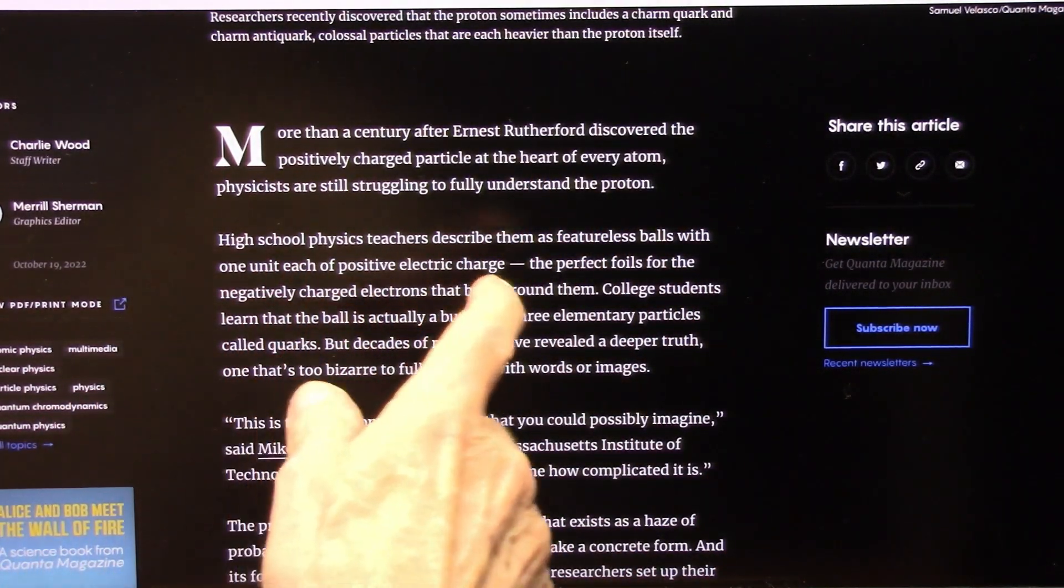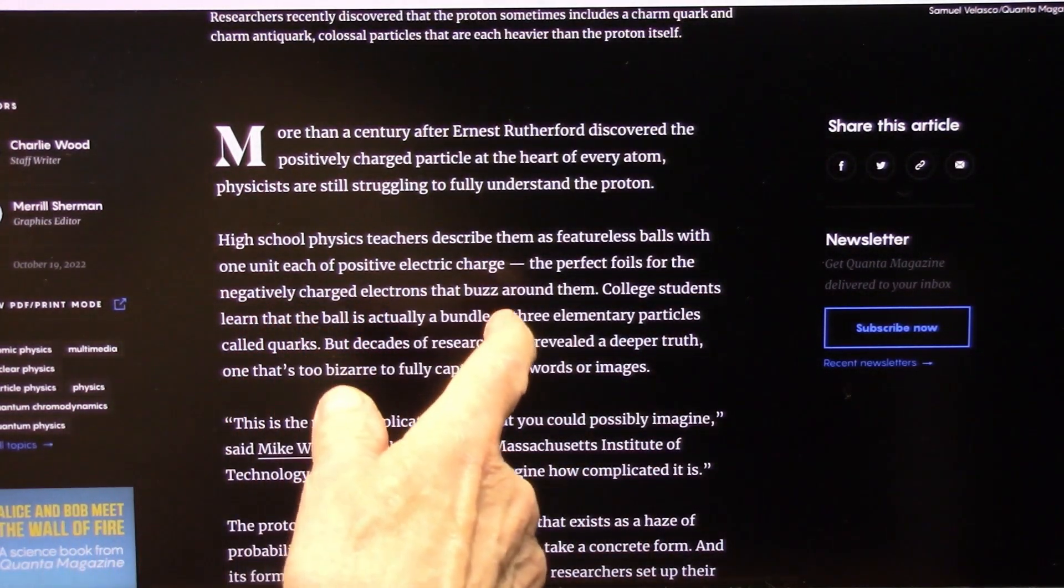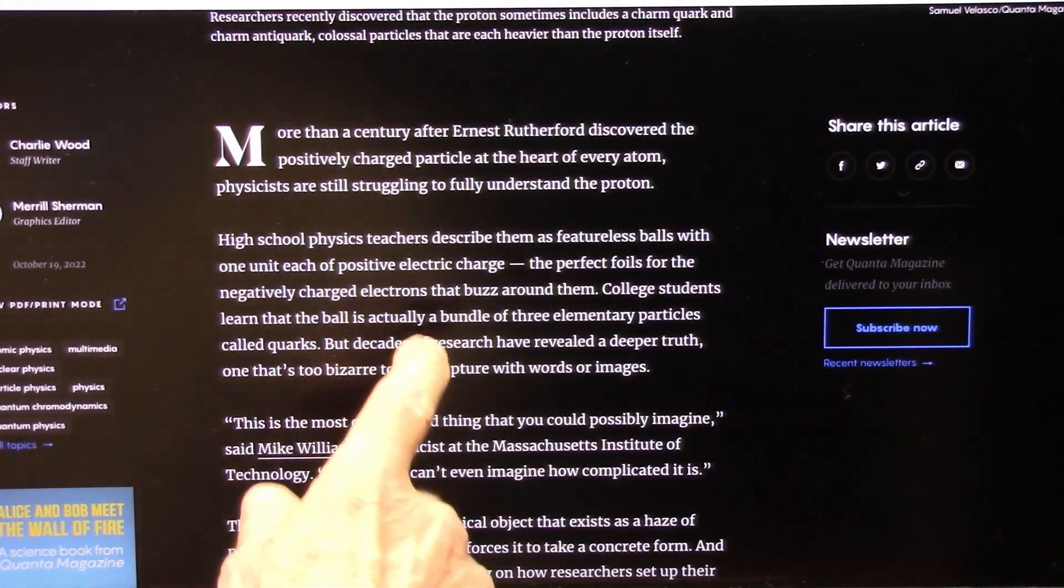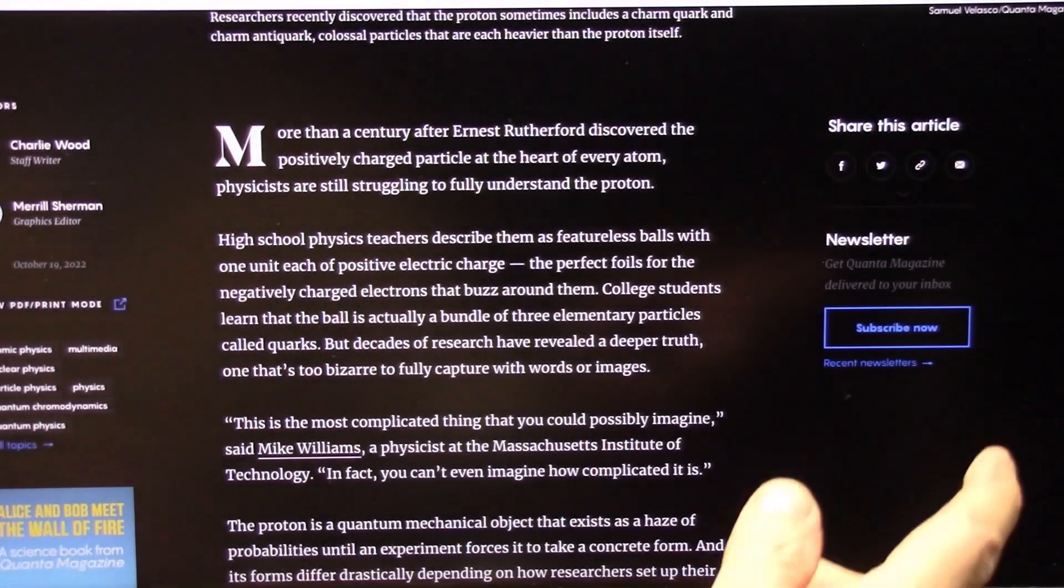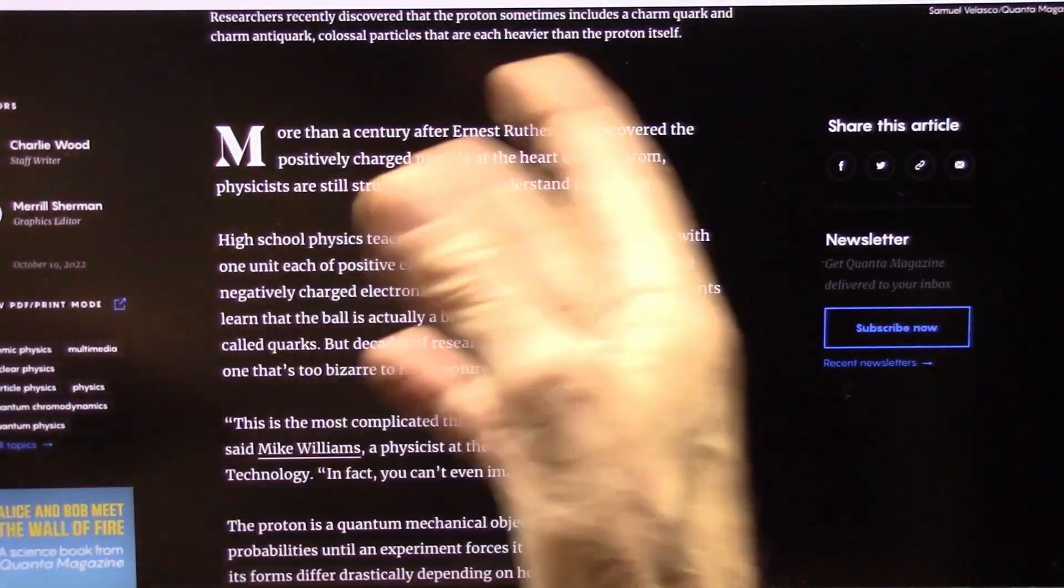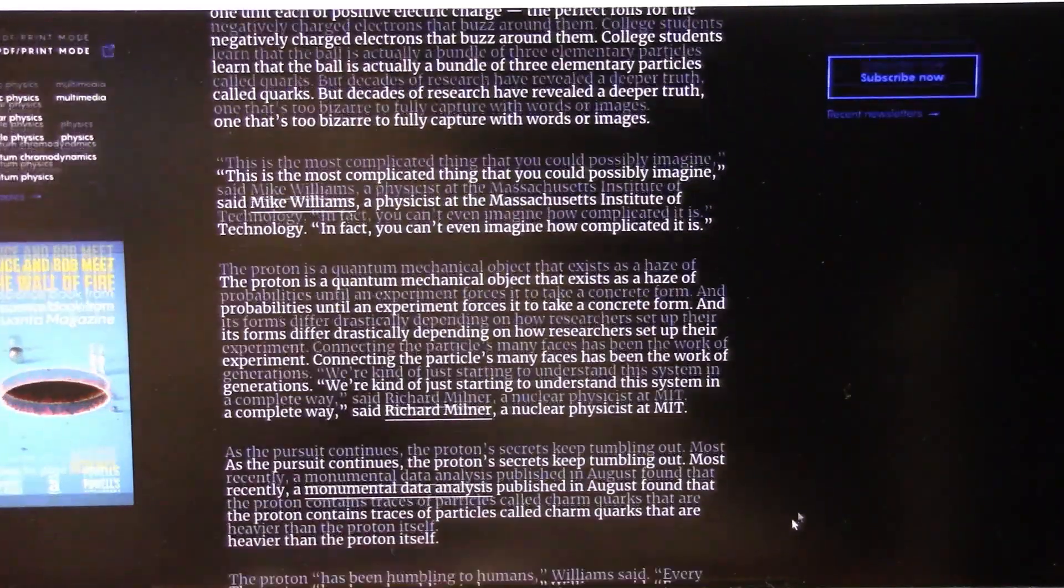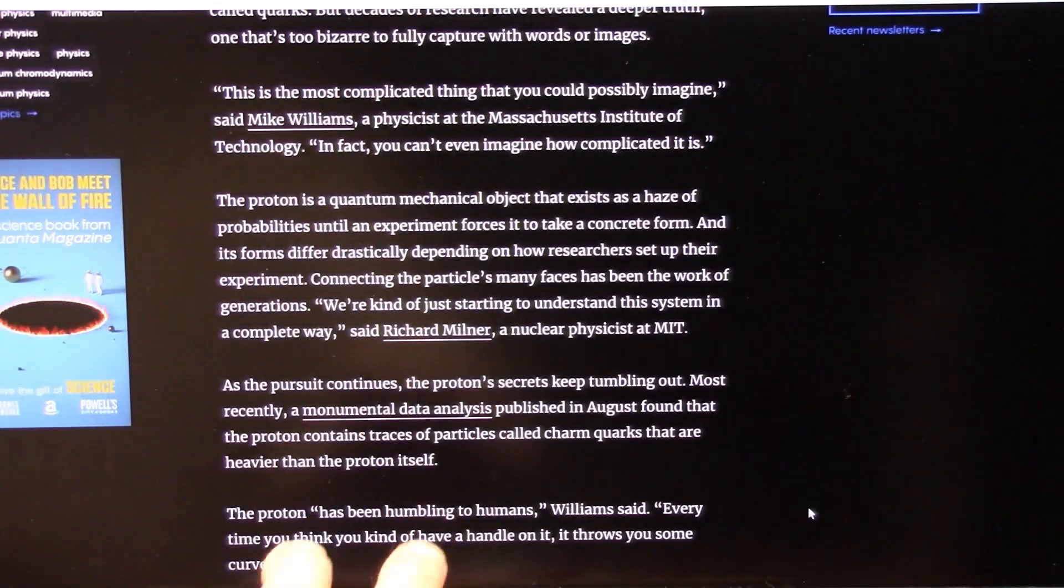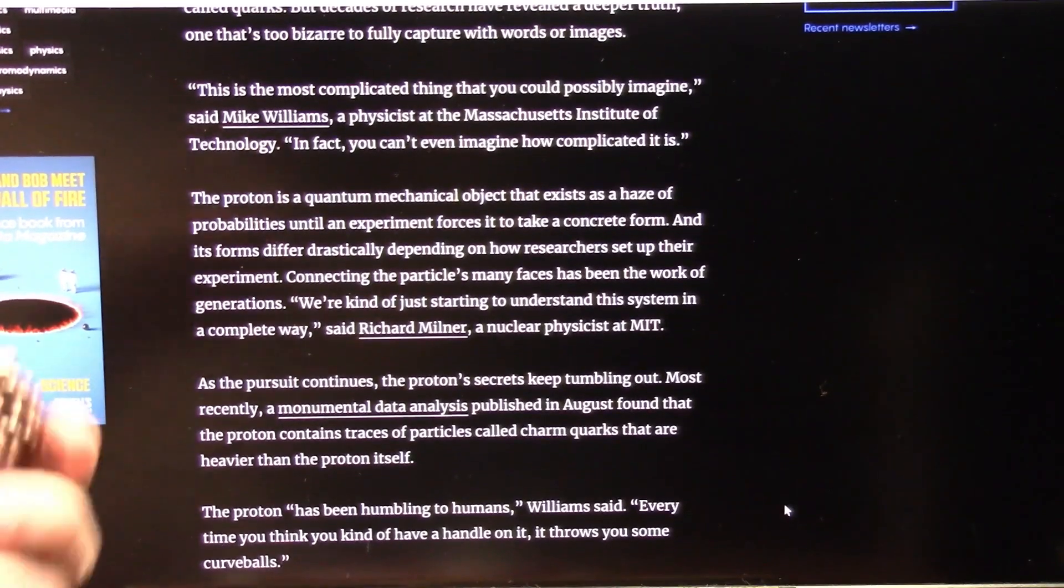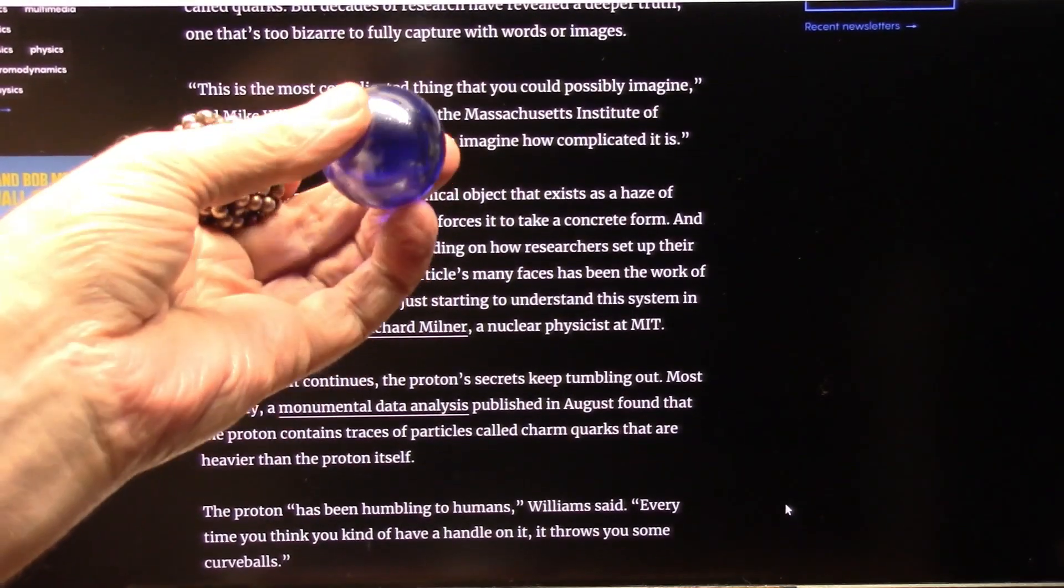High school physics teachers described them as featureless balls with one unit each of positive electric charge. But when you get to college, college students learn the ball is actually a bundle of three elementary particles. And then when you get further up into the echelons, you start looking about leptons and muons and all this business. Now they're going into some people from MIT who I'm trying to contact. But let me show you what I'm saying it is.